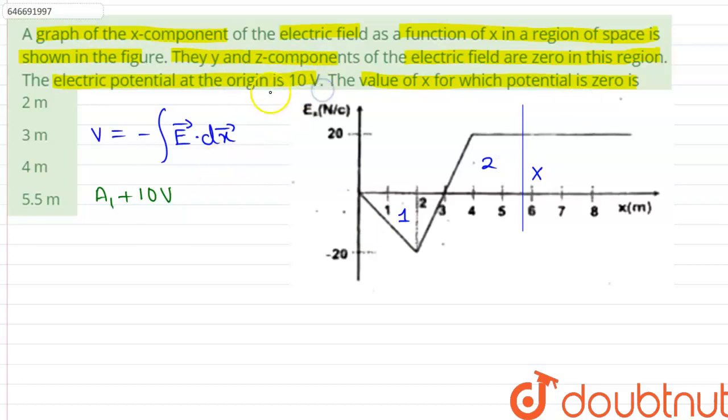The area one is equals to half of the length of base, which is 3, multiplied by the height, which is negative 20. And since we are counting area, we have to take magnitude, therefore this is 20. This implies that A1 is equals to 30 volts.